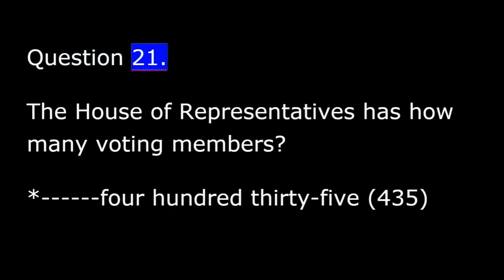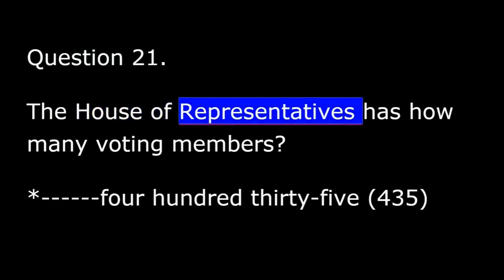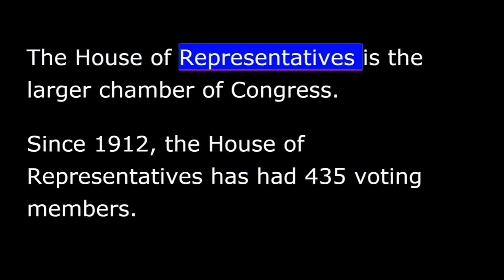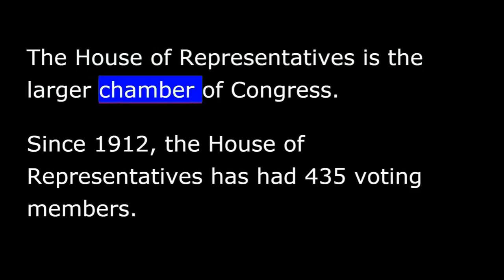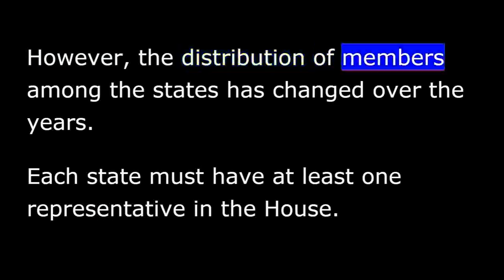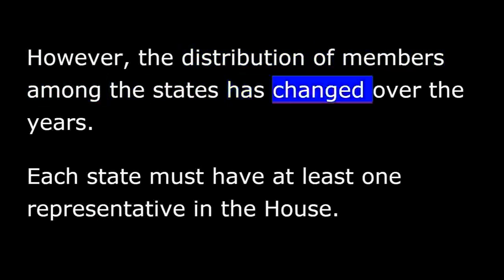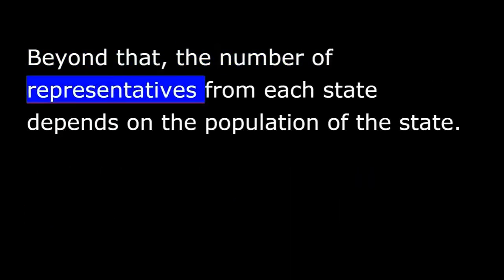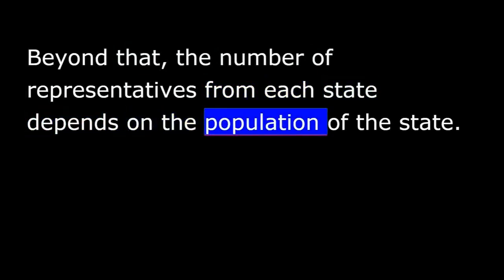Question 21. The House of Representatives has how many voting members? 435. The House of Representatives is the larger chamber of Congress. Since 1912, the House of Representatives has had 435 voting members. However, the distribution of members among the states has changed over the years. Each state must have at least one representative in the House. Beyond that, the number of representatives from each state depends on the population of the state.